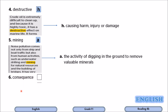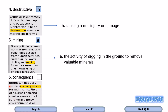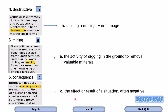Number six: consequence. The sentence reads: 'Noise pollution comes from human activities such as underwater drilling and mining for natural resources, and these have very serious consequences for marine life. The first consequence is that small fish and crustaceans cannot survive in a noisy environment.' Consequence means the effect or result of a situation, often negative. It goes with C.